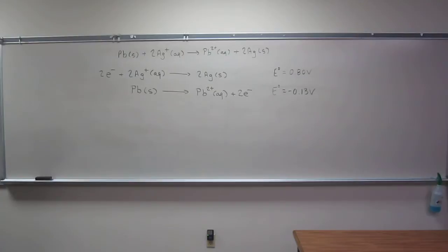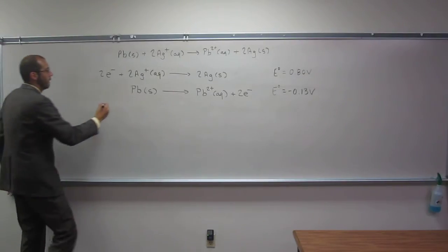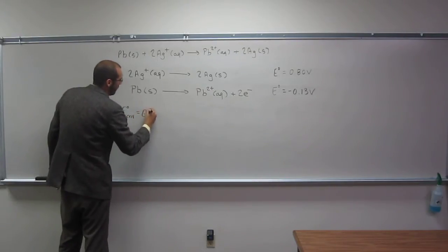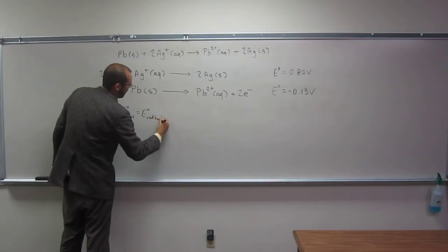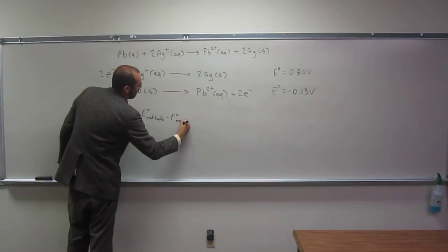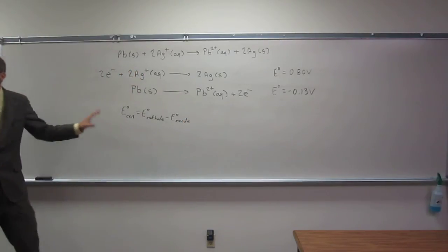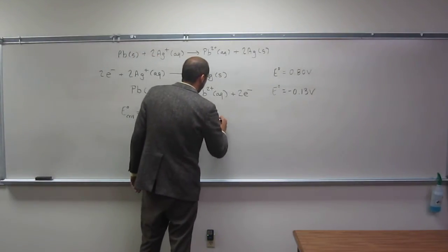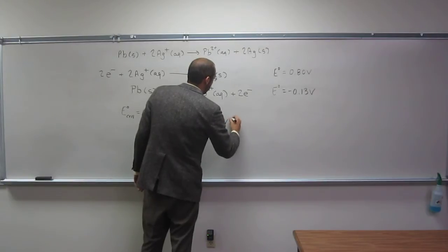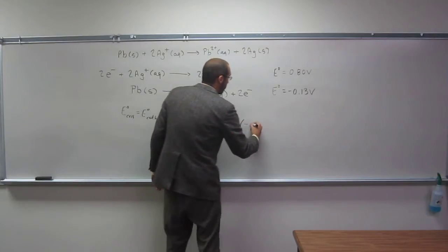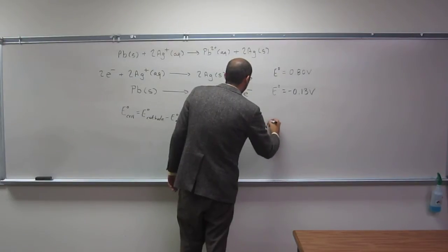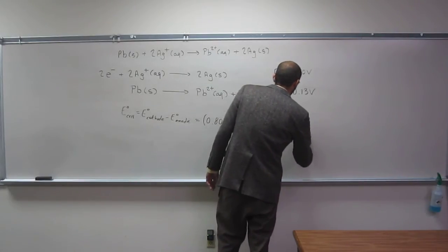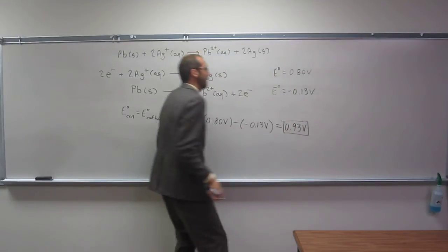Okay, so the E cell, or the potential of the cell, is going to be the potential of the cathode minus the potential of the anode. So for this cell to work, that's got to be a positive number. So that's going to be 0.80 volts minus negative 0.13 volts. So that's going to be 0.93 volts. That's how you get the cell potential.